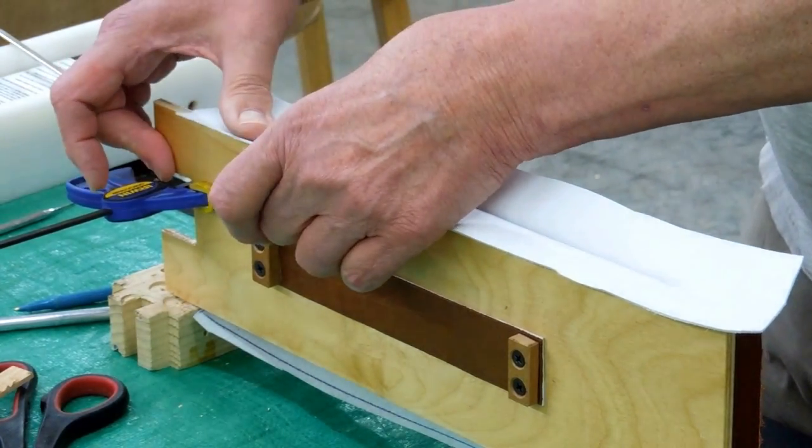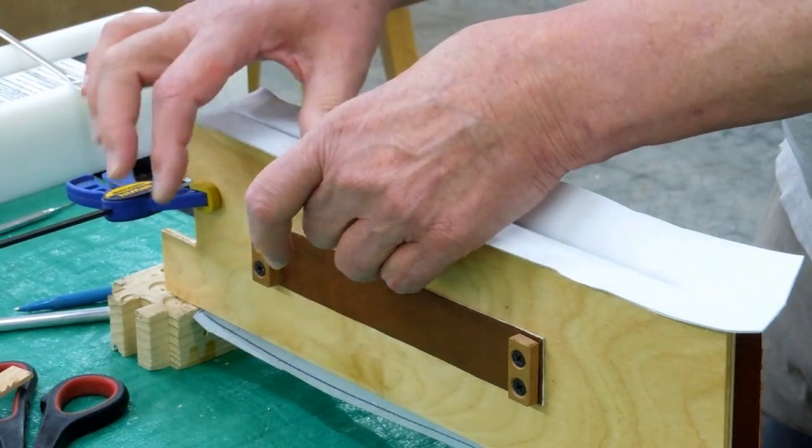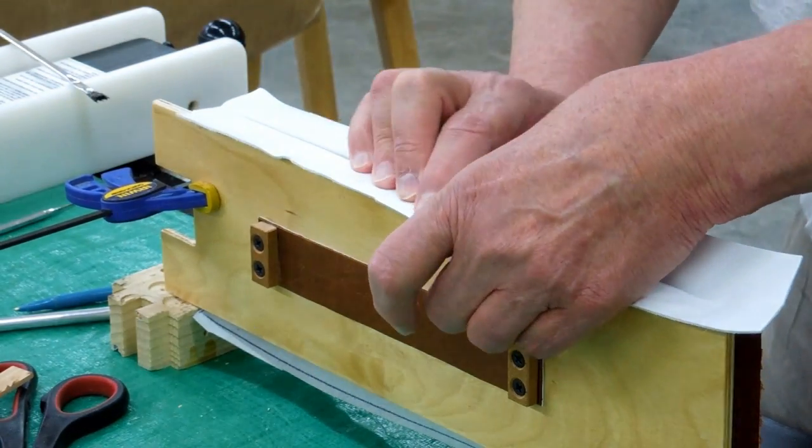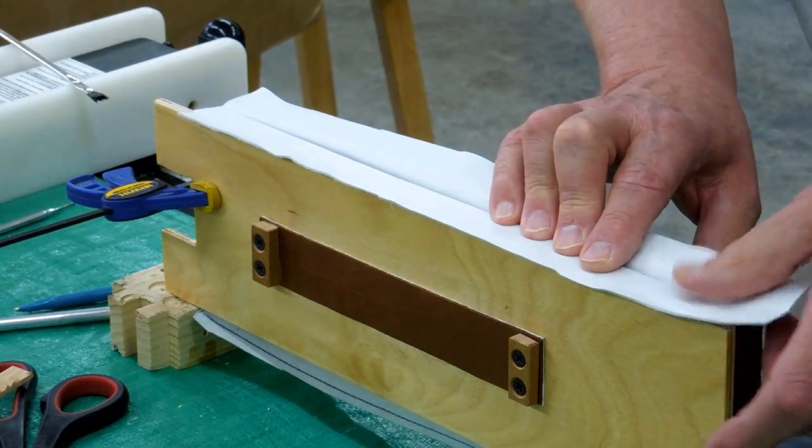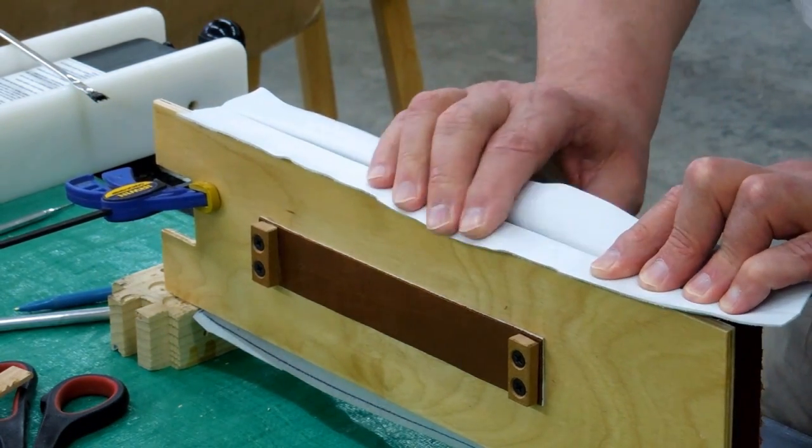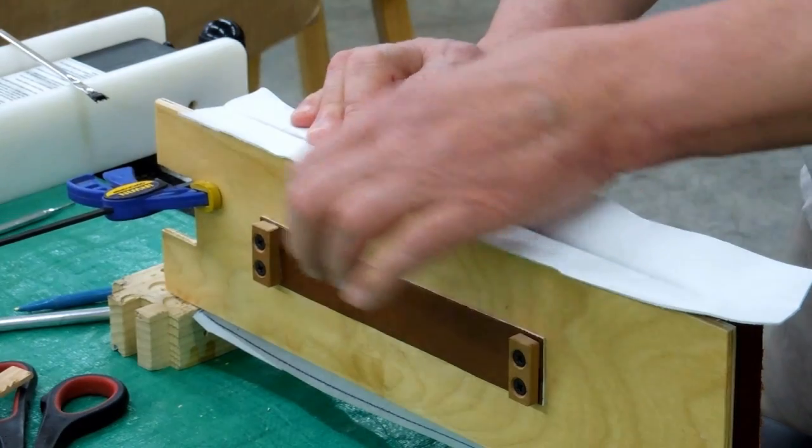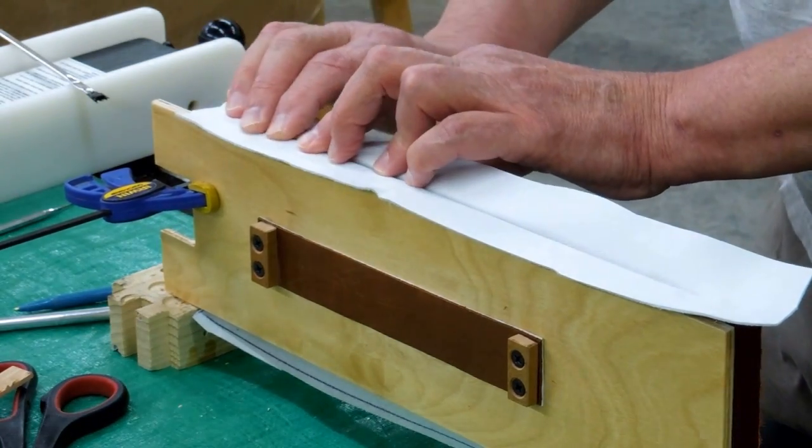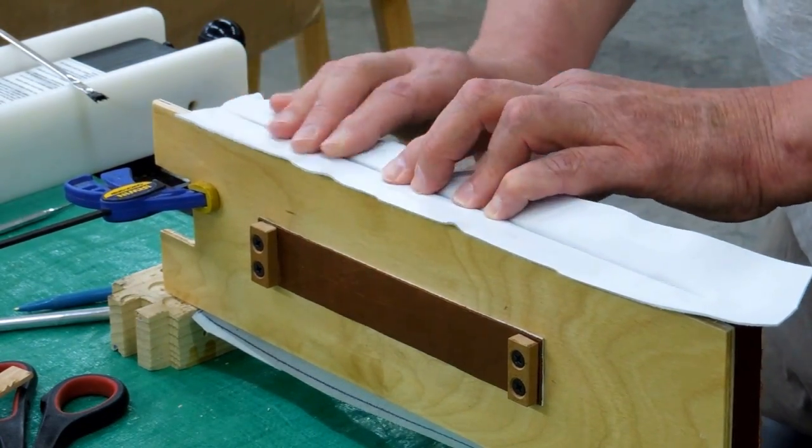This lamb skin or sheep skin is very soft and pliable, wants to move around on you. You need to just keep stretching that a little bit, make sure that that leather stiffener is spinning down inside that gap.